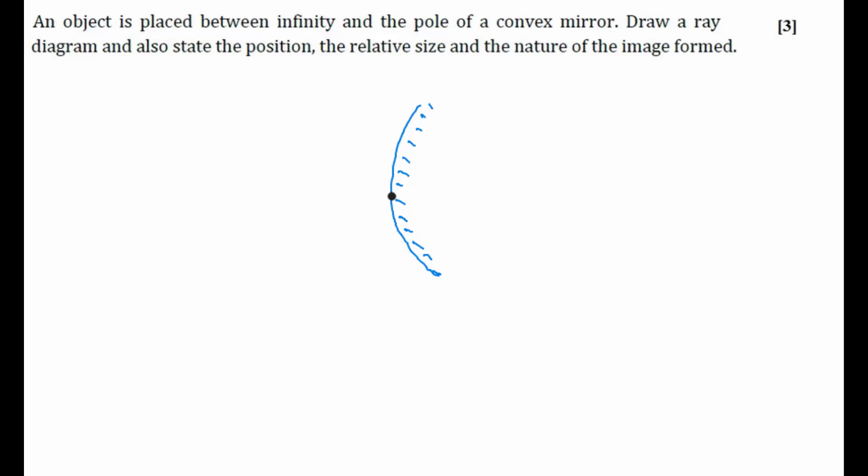So this is our pole and your center of curvature is somewhere here. The line joining pole and center of curvature is known as principal axis. So this is the pole, this is the line joining pole and the center of curvature which is principal axis. Focus will be exactly at the center of the line joining P and C. So this is our focus.